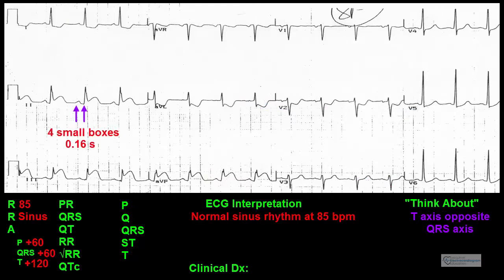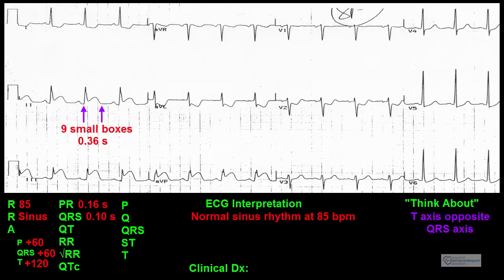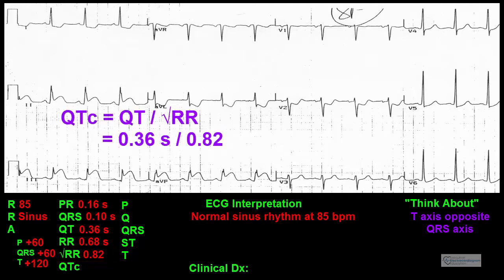Intervals: The PR interval is approximately 4 small boxes wide, or 0.16 seconds — this is normal. The QRS interval appears about 2.5 small boxes wide, or 0.10 seconds — this is also normal. The QT interval is 0.36 seconds. The RR interval is 0.68 seconds; the square root of 0.68 is 0.82. Using Bazett's formula, the corrected QT interval equals 0.36 divided by 0.82, which equals 0.44 seconds — a normal corrected QT interval for either gender.